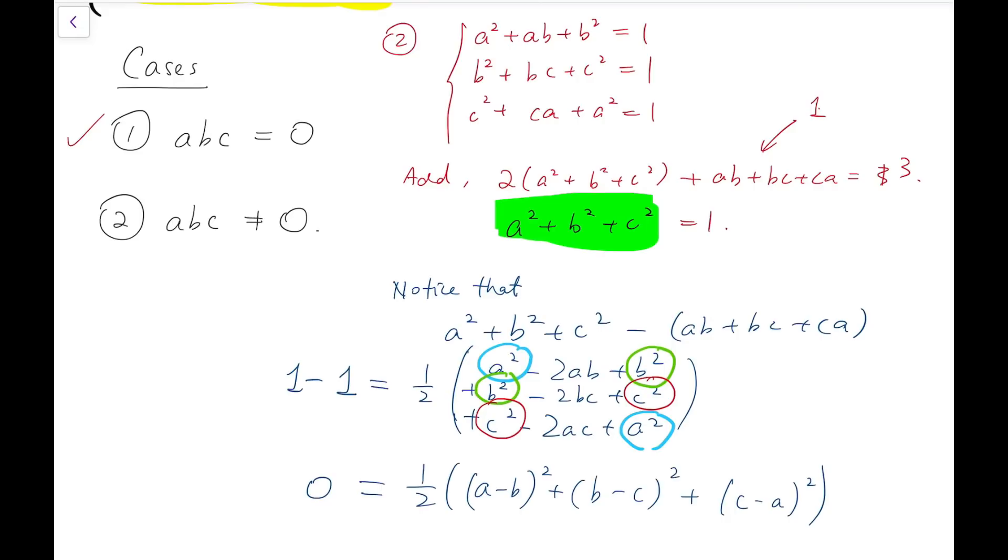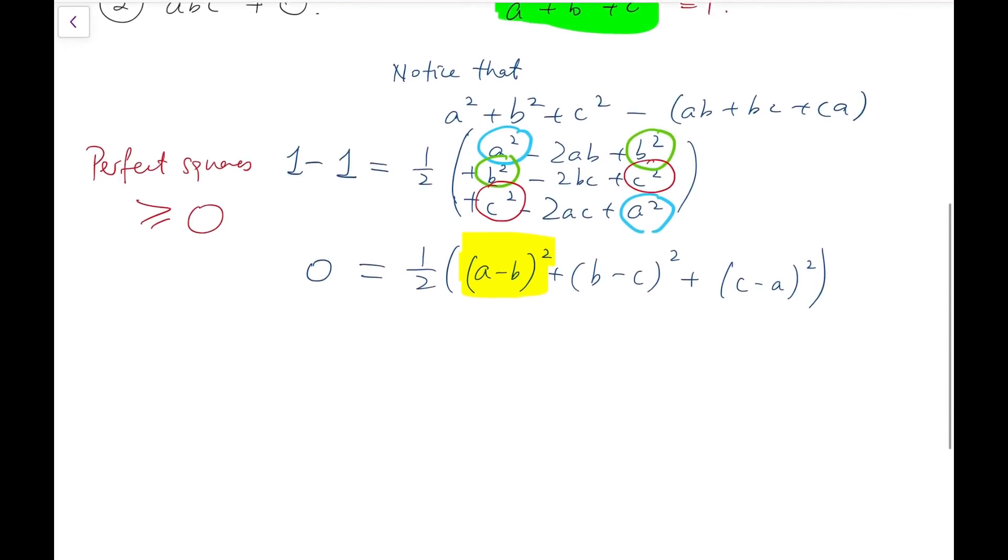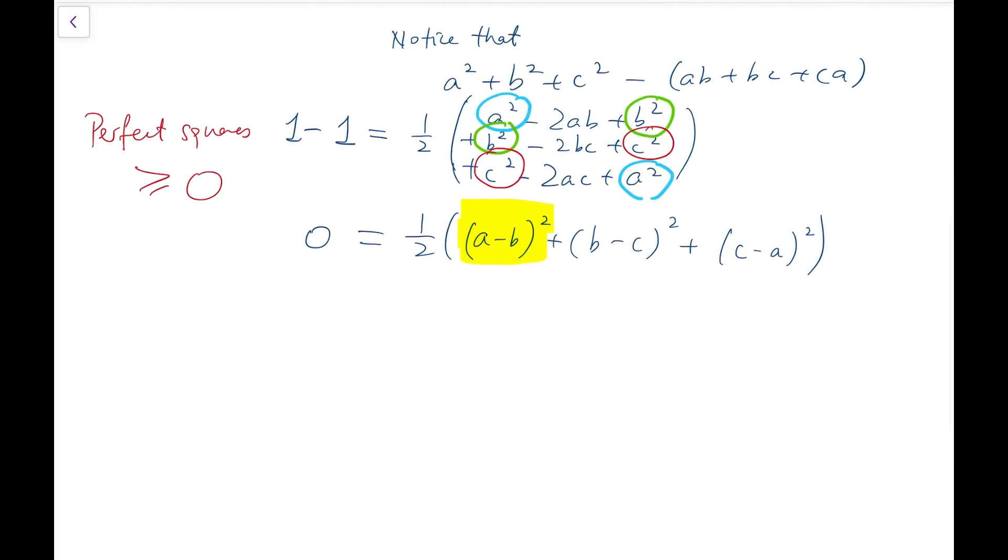Now we have three perfect squares added together equal to 0. But we know that each perfect square must be non-negative. These perfect squares are non-negative, always squared and equal to 0. So that means they must all take value equal to 0. So therefore all three quantities are 0. So that means a equals b equals c.